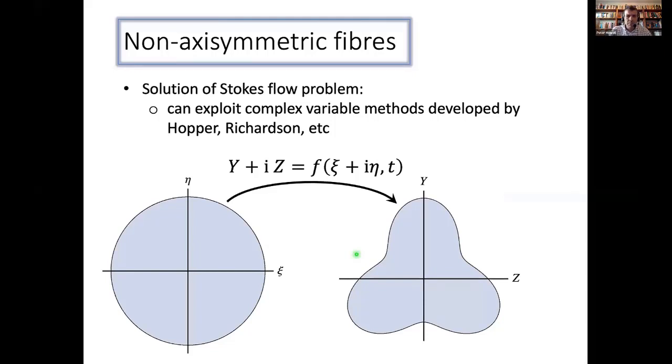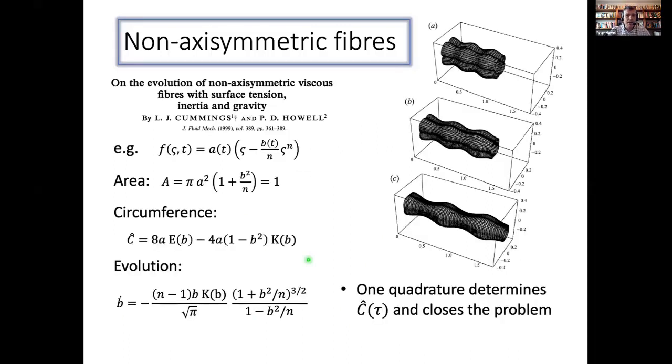And I've shown an example with Linda Cummings, made some progress by using these complex variable methods that are developed by Hopper and Stan Richardson and other authors. So the idea is, here's my funny shape cross section. I'm going to try and view that as the image of the unit disk under a time dependent conformal map. This F is a time dependent conformal map. And then basically, if I work out what F is, I know what the cross section is doing as a function of time. And so Linda was important to do this. She's an expert in this stuff. And there's a whole industry in figuring out different classes of conformal maps for which this works.